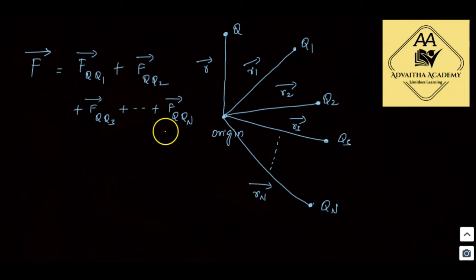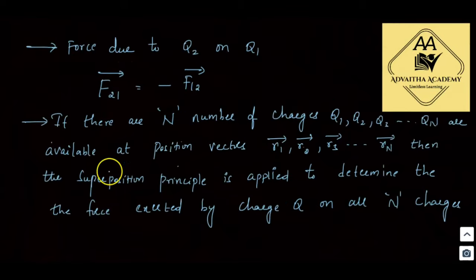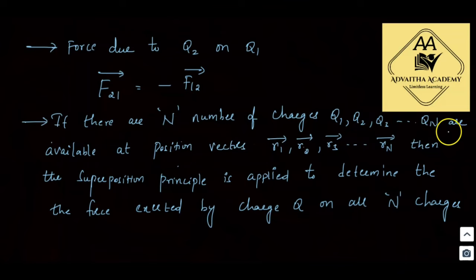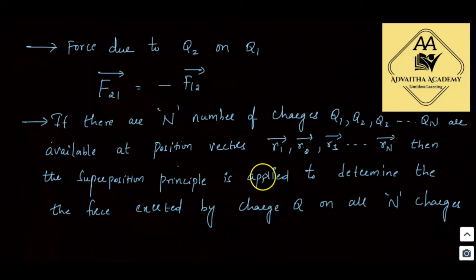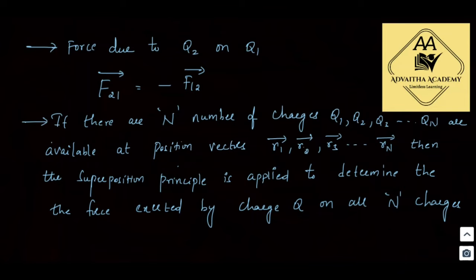That is the superposition principle: the total force exerted by charge q on all n charges is the vector sum of all individual forces. If there are n charges q1, q2, … qn at position vectors r1-bar through rn-bar, the superposition principle determines the total force exerted by q on all n charges.